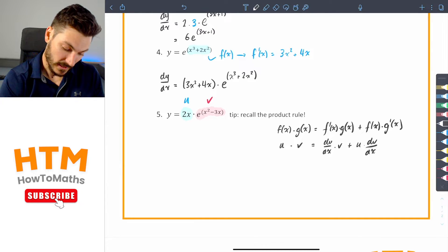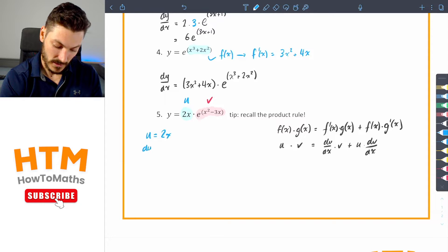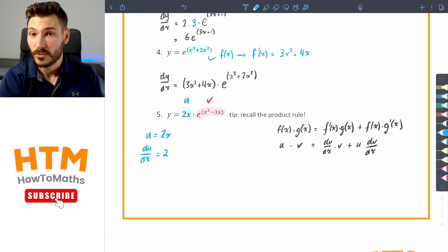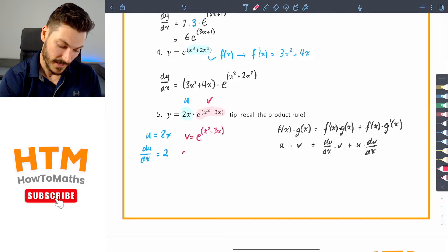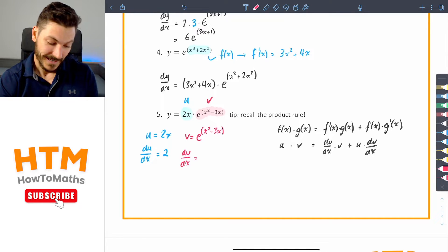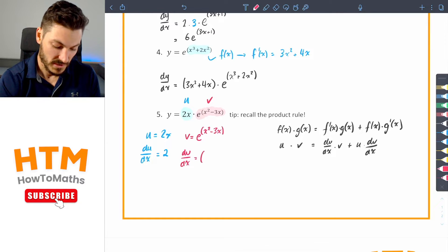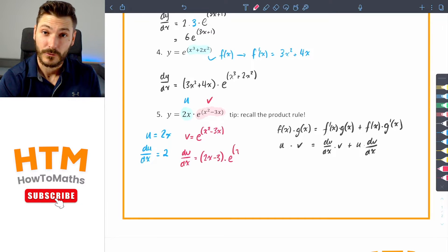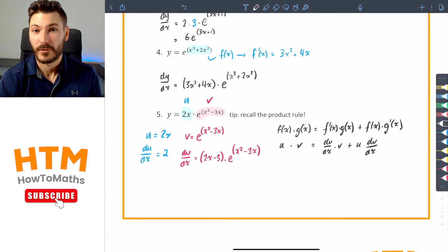So we're going to have to have, if I've got u equals 2x, then du dx, the derivative, is just 2. And if I have v equals e to the power of x squared minus 3x, I have dv dx is equal to, now this is where we're going to derive this exponential. It's similar to the one above. So I'm going to skip the chain rule part and just go straight to the answer, which is going to be 2x minus 3 multiplied by the original, x squared minus 3x. And now I substitute them into my product rule.